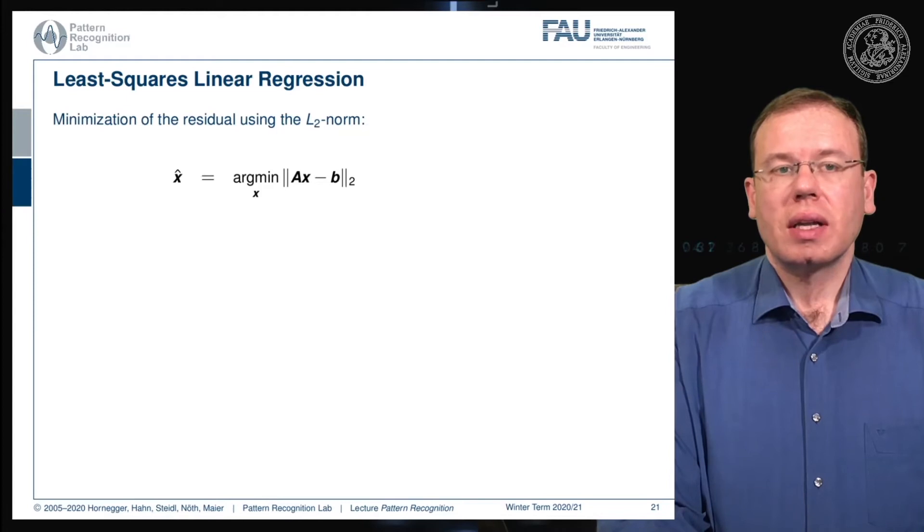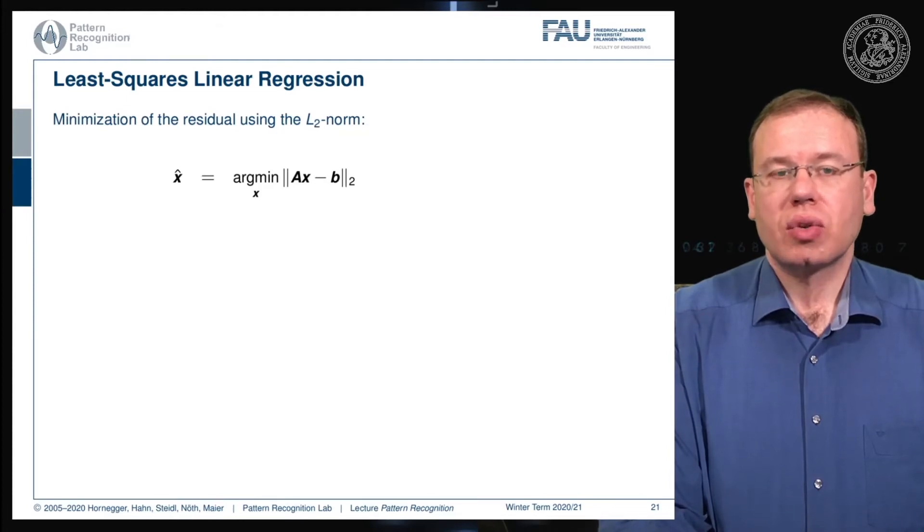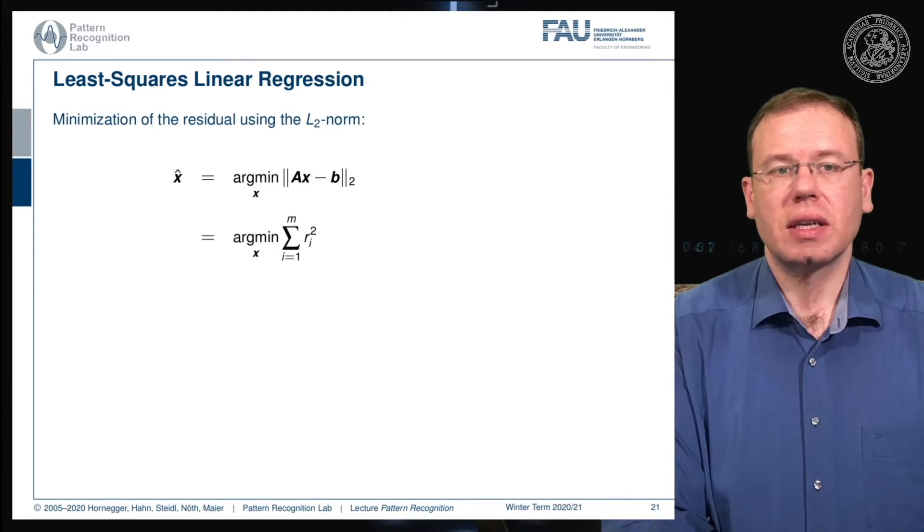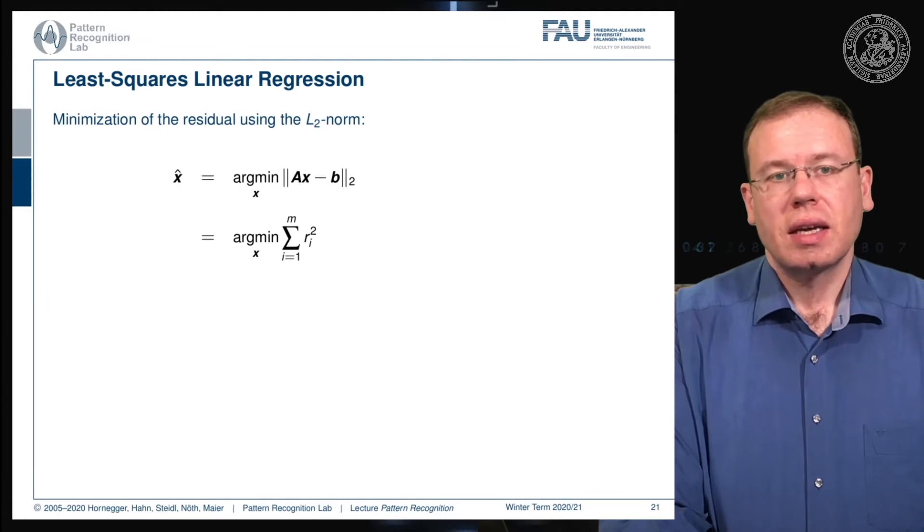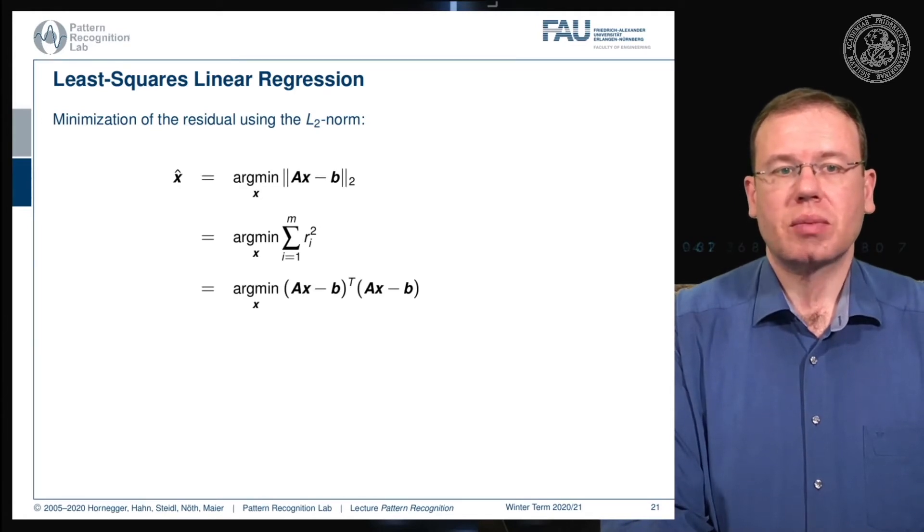The minimization using the 2-norm is something we've already seen. We simply have Ax minus b and the 2-norm of that, which can be rewritten as the minimization over the residuals. The residuals can be expressed as Ax minus b transpose times Ax minus b, and now we can do the math.